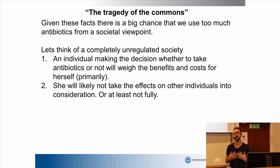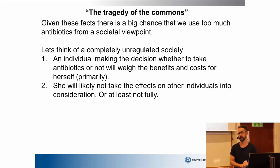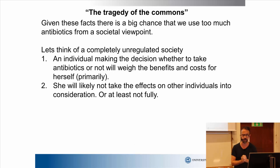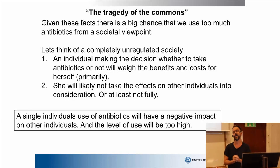A collective action problem — or a tragedy of the commons — is the fact that people, when they decide whether to use antibiotics or not, are basically going to compare the benefits and costs for themselves. What is the cost of being sick? What are the benefits of taking antibiotics? They would not tend to take into consideration what would happen with society or other people. Because of that, they will tend to use too much antibiotics from a social point of view — that is the tragedy of the commons. So the level of antibiotic use in an unregulated society would be too high, and there would be too much antibiotic resistance.